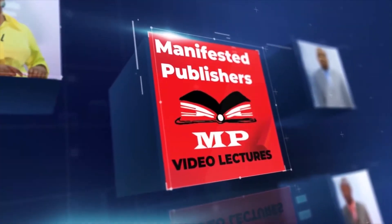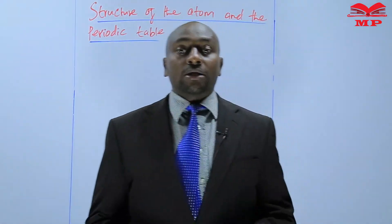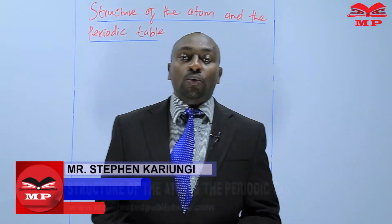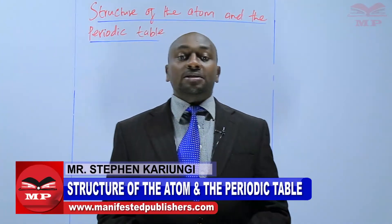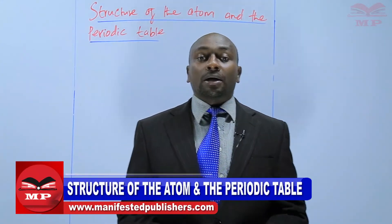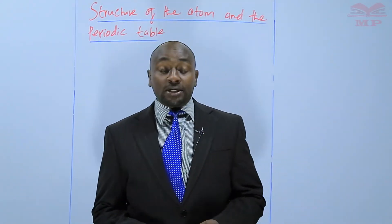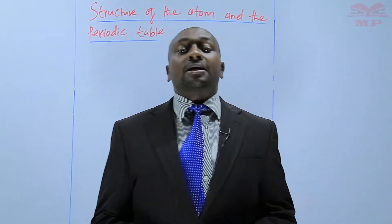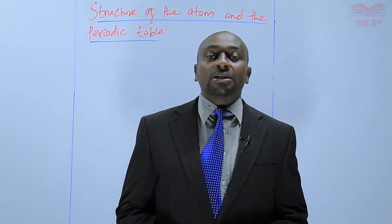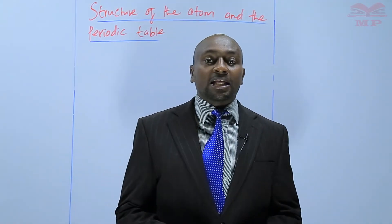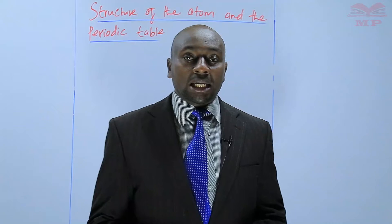Welcome to Manifested Publishers. Welcome learners, my name is Stephen Karyungi. Today we continue with our topic of discussion in chemistry and we are discussing the structure of the atom and the periodic table. During the last lesson, we discussed the energy levels and the electron arrangement. So today I want us to see the electron arrangement of the first 20 elements.